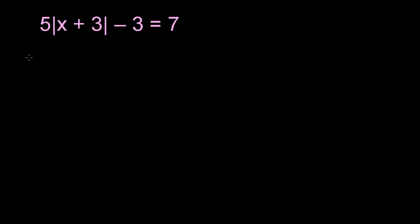We're given the equation: 5 times the absolute value of x plus 3, minus 3, is equal to 7. It's always a little daunting to see an equation with an absolute value sign. When you only have one of them like this, what I like to do is isolate it and just think it through from that point. So let's try to isolate the absolute value of x plus 3.